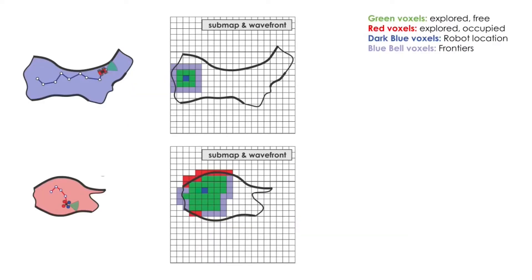Onboard each robot, wavefront propagation takes place and allows to detect the frontiers of the exploration space. The wavefront is propagated from the origin of the submap, which is the position of the robot at the time it starts building a submap.